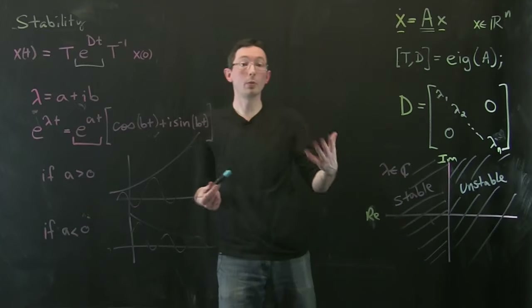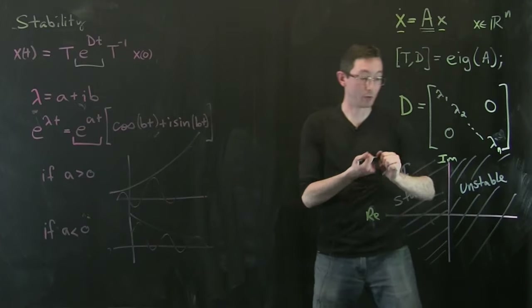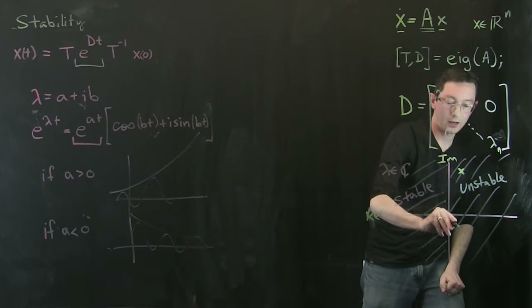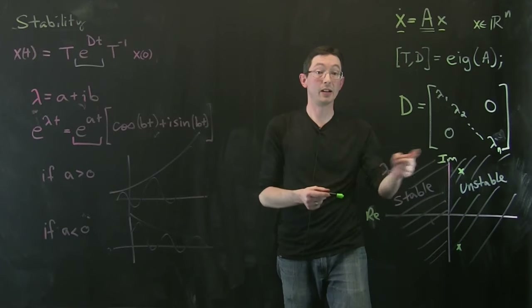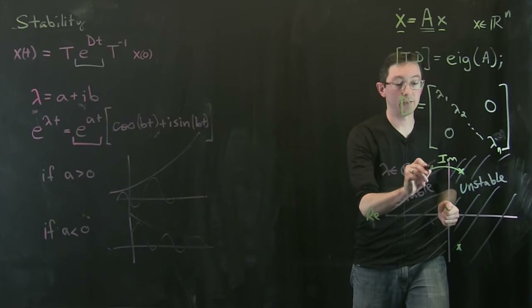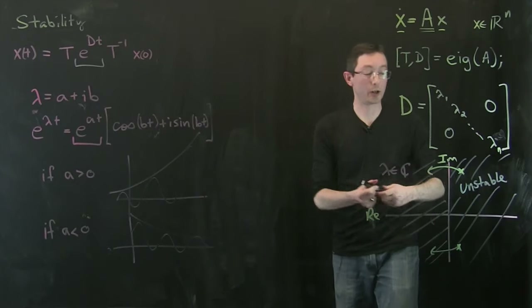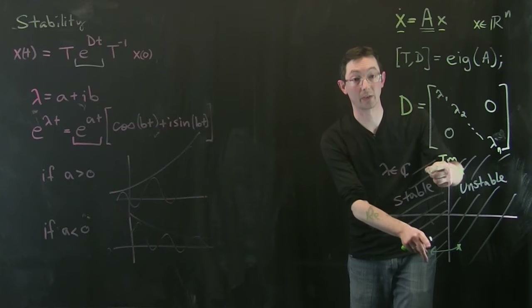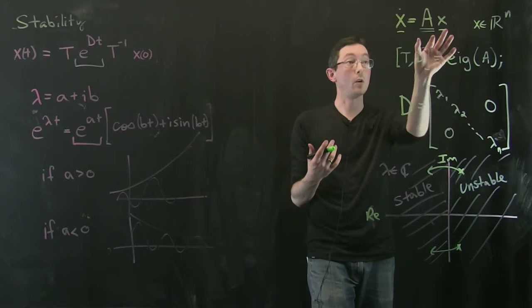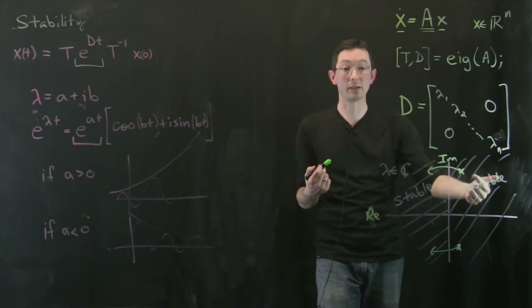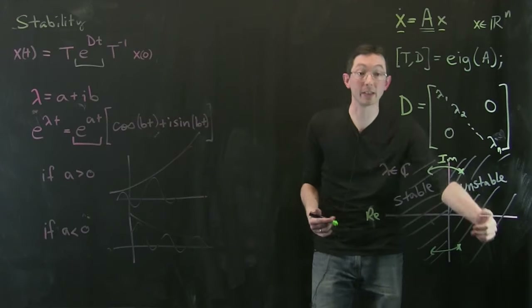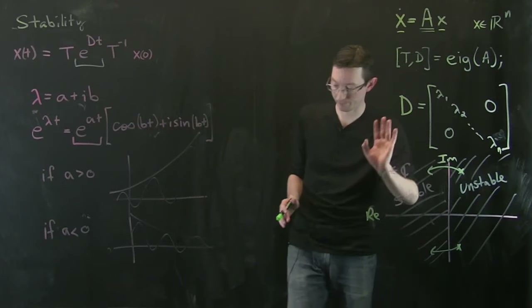A big part of what we do in control systems is start with an A matrix that has some unstable dynamics — maybe a couple of eigenvalues that are slightly unstable with positive real parts. By adding +Bu, we're going to try to drive the system into stability, forcing those eigenvalues to become stable. We can characterize what we want A to look like almost entirely based on its eigenvalues, driving them into the stable left half plane.